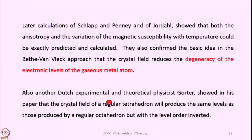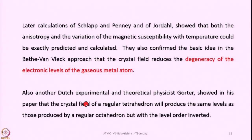Dutch experimental and theoretical physicist Gauter showed in his paper that the crystal field of a regular tetrahedron produces the same levels as those of a regular octahedron, but with the level order inverted. In an octahedral field, Eg is higher in energy and T2g is lower; in a tetrahedral field, the opposite is true — T2 becomes higher in energy and E becomes lower. This was predicted through Gauter's experimental and theoretical work.